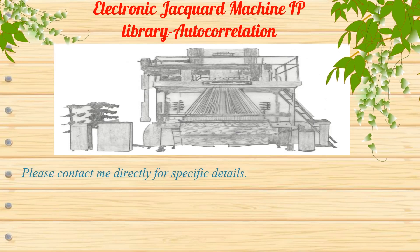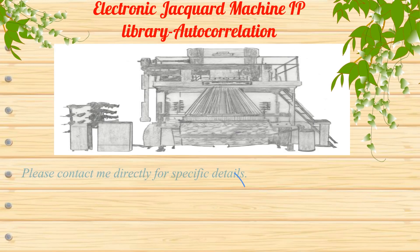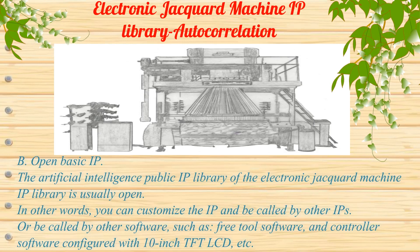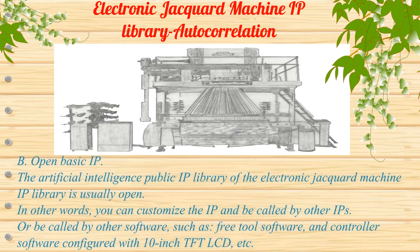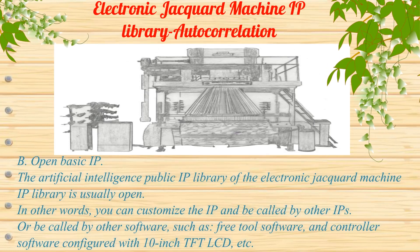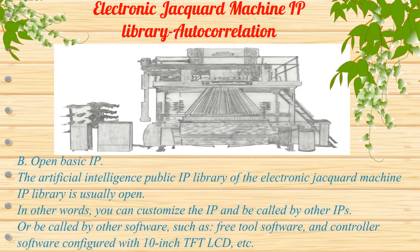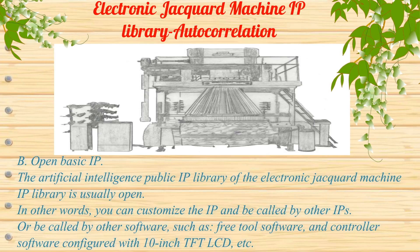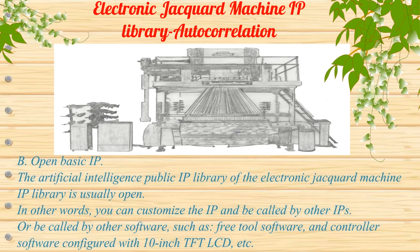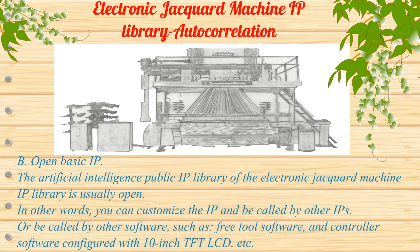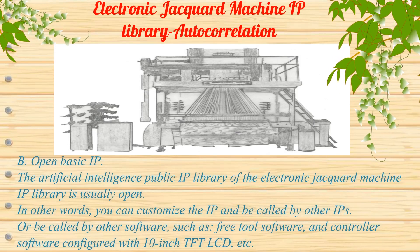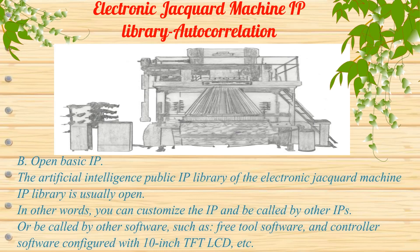Please contact me directly for specific details. The artificial intelligence public IP library of the electronic jacquard machine IP library is usually open. In other words, you can customize the IP to be called by other IPs, or by other software, such as free tool software and controller software configured with a 10-inch TFT LCD, etc.